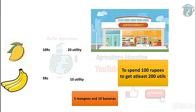Since we are buying 5 mangoes at 10 rupees each, that is 5 × 10 = 50 rupees. And 10 bananas at 5 rupees each, that is 10 × 5 = 50 rupees. So 50 + 50 = 100 rupees — the budget is met. For utility: 5 mangoes × 20 utils each = 100 utils, and 10 bananas × 10 utils each = 100 utils, giving 100 + 100 = 200 utils. So you spent 100 rupees and got 200 utils — maximum satisfaction.